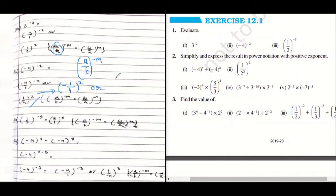Or we can write it as minus square is positive. 1 square is 1. 4 square is 16. So answer is 1 upon 16.